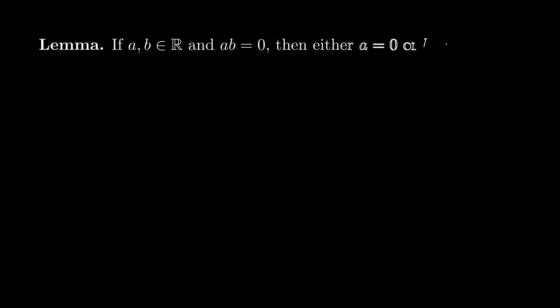If a and b are real numbers, and ab = 0, then either a = 0 or b = 0. Let's prove this.